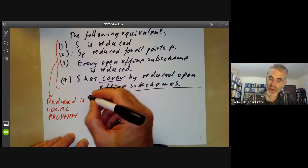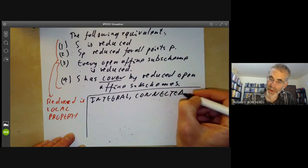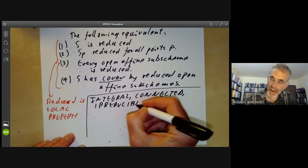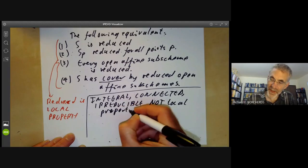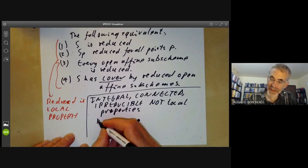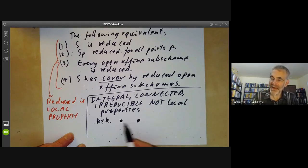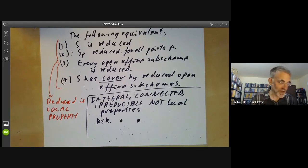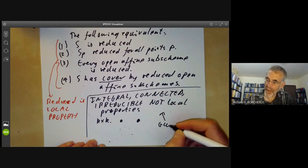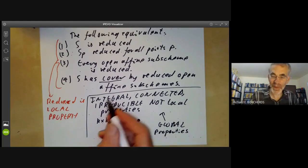For examples of properties that are not local, note that being integral, connected, or irreducible are not local properties. For example, if you take a scheme consisting of the spectrum of a product of two fields, it consists of two points and each point is integral, connected, and irreducible. So we can cover this scheme by open sets with all these properties, but the scheme itself is not integral, connected, or irreducible. These are global properties — you have to look at the whole scheme at once.